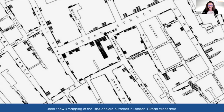This is a map that John Snow created in 1854 during a cholera outbreak in London — one of the first examples of a visual representation of data. At the time, people believed cholera was a miasma in the air. He was trying to prove something else was going on because only certain people were getting it. The little marks show all the people who got cholera, and you can see how many are right next to a water pump.